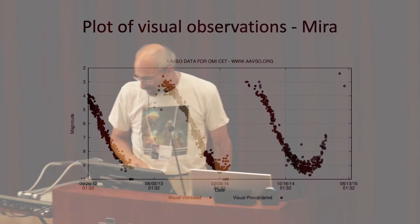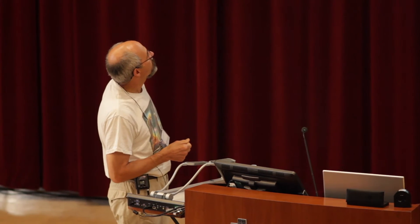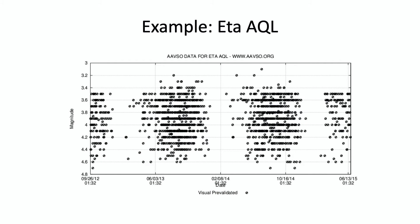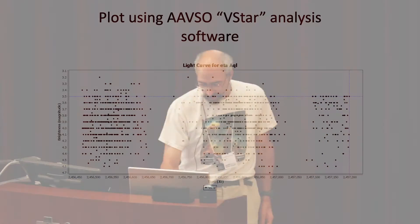Another example you may or may not be familiar with: Eta Aquilae. It varies in magnitude from about 3.5 to 4.5, and there's quite a bit more scatter in the visual observations. Pick any date and there is quite a range of magnitudes that people have reported. Errors are extremely important to watch out for — there's also the problem of whether there are any nearby comparison stars that make it practical to get a good, solid, reliable magnitude estimate.